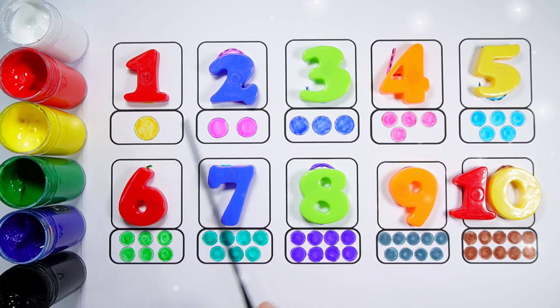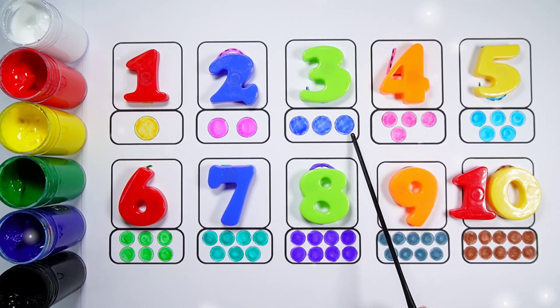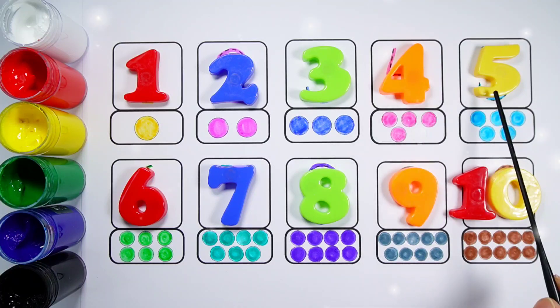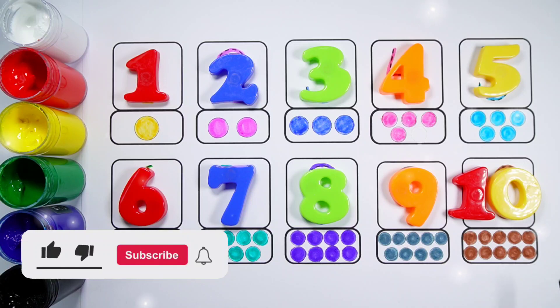Number 1, 1 ball. Number 2, 1, 2, 2 balls. Number 3, 1, 2, 3, 3 balls. Number 4, 1, 2, 3, 4, 4 balls. Number 5, 1, 2, 3, 4, 5, 5 balls. Number 6, 1, 2, 3, 4, 5, 6, 6 balls. Number 7, 1, 2, 3, 4, 5, 6, 7. 1, 2, 3, 4, 5, 6, 7, 8, 9, 10, 10 balls.